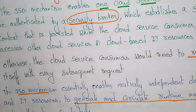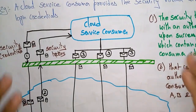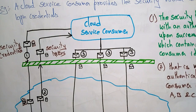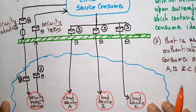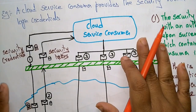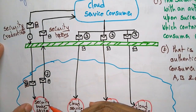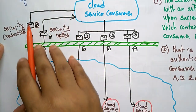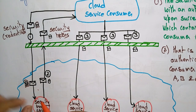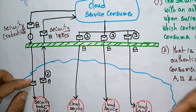Let's see an example. The cloud service consumer provides the security broker with login credentials. Let's say you are the cloud service consumer — you want to access your email, you want to log in to your mail account. There are different cloud services: Amazon, Microsoft, Google — different cloud service providers are there. The cloud service consumer, with the help of the security broker, sends security credentials. Whatever data the login has, it contains some security credentials, and the security broker services send the data to the cloud service consumer.